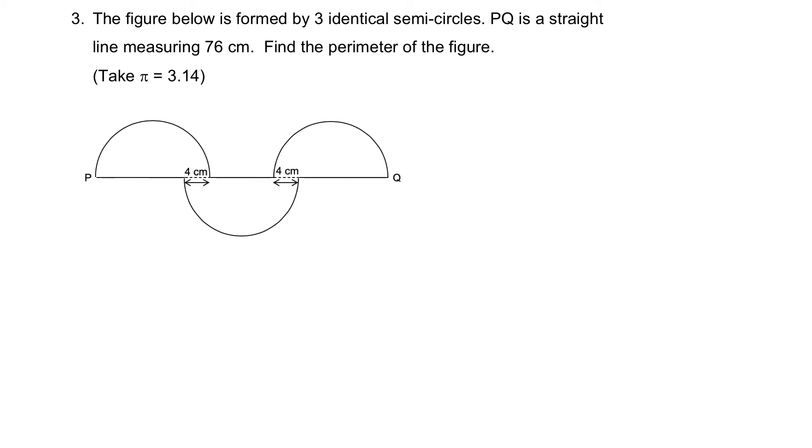This question looks somewhat similar to last year's PSLE question, probably in a simpler form. The figure below is formed by three identical semicircles. PQ is a straight line measuring 76 cm, from P cutting through the entire thing to Q. Find the perimeter of the figure, which means what you want to find is the three circumferences of the semicircles plus this and this and this. This is the perimeter which they are trying to find.